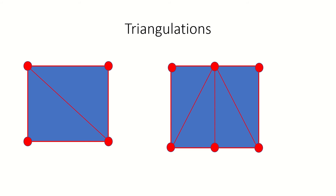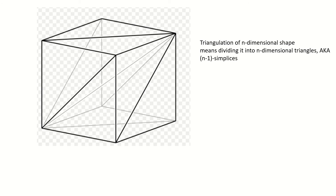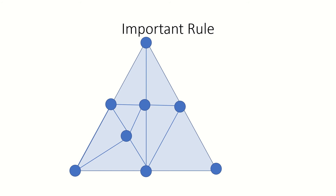Triangulations can also extend to higher dimensions. What would a triangulation of a three-dimensional shape look like? Well, here's a triangulation of a cube. Triangulating a 3D shape means splitting the shape into tetrahedrons. Generalizing, a triangulation of an n-dimensional shape means splitting it into various n-dimensional equivalents of a triangle, or n-1 simplices. One requirement of triangulations is that each triangle in the triangulation either shares no vertices, shares one vertex, or shares a common edge with another triangle in the triangulation. Also, keep in mind that we can triangulate a line segment, which is really just a one-dimensional version of a triangle, or a one simplex. Triangulating a line segment means splitting it into smaller line segments. Here are some examples of triangulations of line segments.